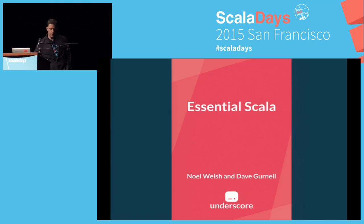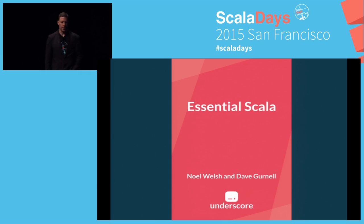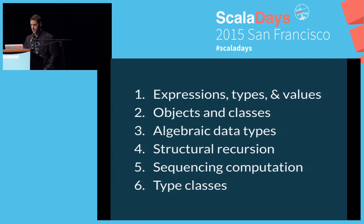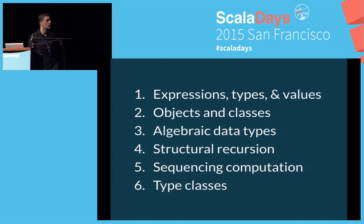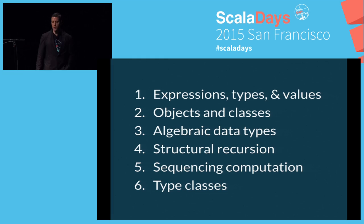What I'm discussing is patterns from our book, our textbook, Essential Scala. There are six main ones. As the title of the talk suggests: Types, Expressions, Values, Object Classes, Algebraic Data Types, Structural Recursion, Sequencing Computation, and Type Classes.